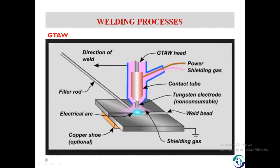In the GTAW process, the arc is produced between the base metal and the non-consumable tungsten electrode. This process may or may not use filler metal to make a weld. To protect the weld from the atmosphere or other contaminants, a separate shielding gas is supplied. In this process, the base metal is positively charged and the non-consumable tungsten electrode is negatively charged, so it utilizes straight polarity. The power source may be AC or DC. The polarity is only related to the DC power source; for AC there is no polarity.